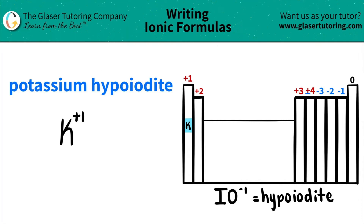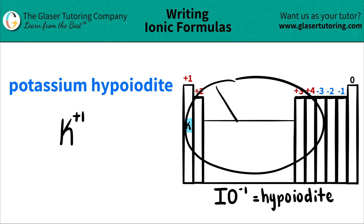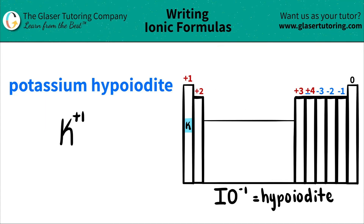Here's a little trick: anytime that you see an "-ite" ending, it's always a polyatomic ion, but polyatomic ions are never going to be found on the periodic table — you have to memorize them. So I wrote the one down that we're going to be using here. Hypoiodide is always IO with a negative one charge.